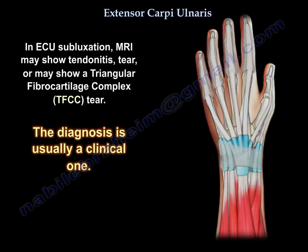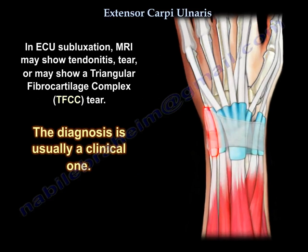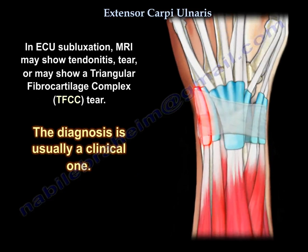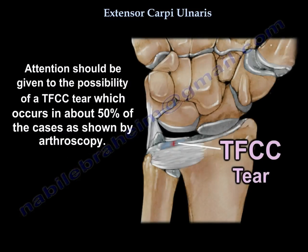The extensor carpi ulnaris sub-sheath is critical to extensor carpi ulnaris tendon stability and is part of the TFCC. MRI may show tendinitis, a tear, or may show triangular fibrocartilage tear, which occurs in about 50% of cases as shown by arthroscopy. The diagnosis is usually a clinical one, but attention should be given to the possibility of a triangular fibrocartilage tear.